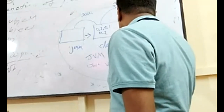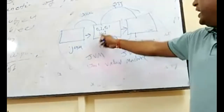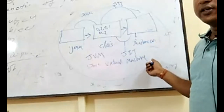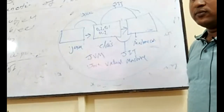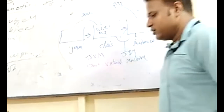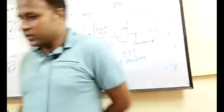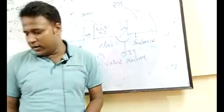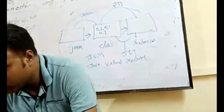All of this is handled by the JVM — Java Virtual Machine — which is responsible for compiling the Java application and executing the machine code.